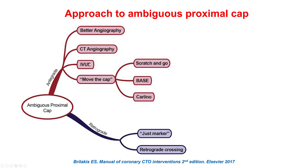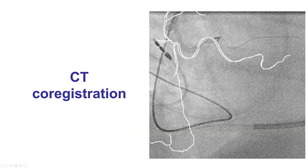The third is to do IVUS, especially if there's a side branch next to the proximal CAP, which was the case in our patient with an acute marginal branch. The fourth option is to do a dissection re-entry technique proximal to the occlusion and navigate in the sub-intimal space. The fifth approach is to go retrograde.